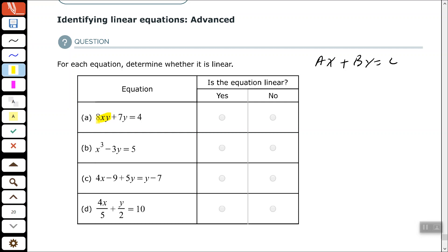So, in this first term, I have x times y. We don't see that in a standard form of our equation, a standard form for the equation of a linear line. So, no, that is not linear because that xy being multiplied within that one term.